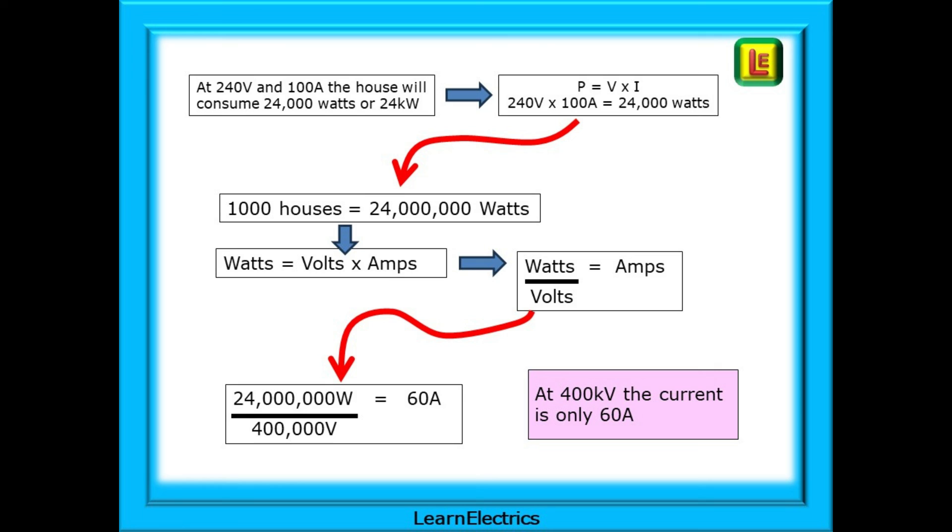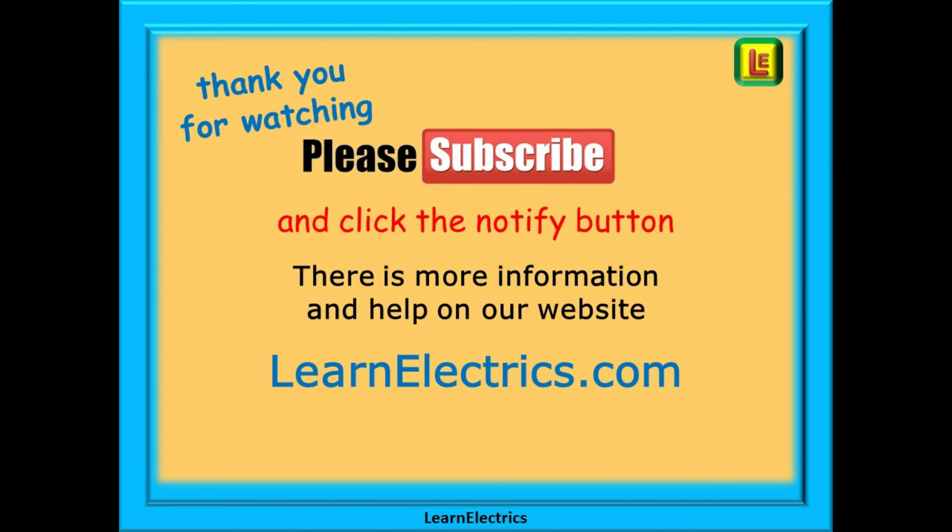And then, at the step-down transformers, we can reduce the voltage and this will increase the available current. Remember, voltage stays the same across the transformer. If the voltage goes down, the current must go up. And so we end this video and we hope you've enjoyed it and thank you for watching. It really is appreciated.